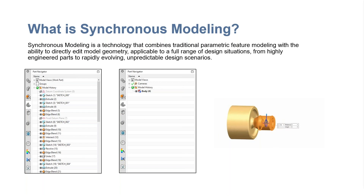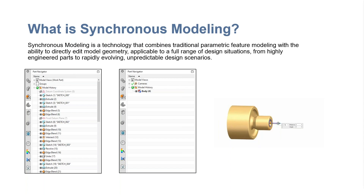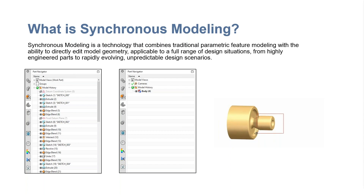If you think about it, synchronous modeling enables you to really rapidly create and change your concept of your model depending on where it comes from. So if you work inside of NX, you typically have the part navigator and all the features that made up that particular model. But if you get something sent to you — maybe IGES, STEP, or some other CAD product — you may end up getting a featureless body that's brought in, and you need to manipulate that model for your application.